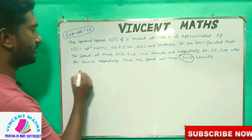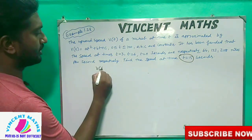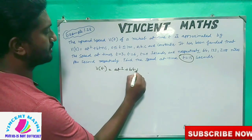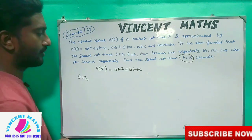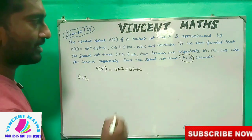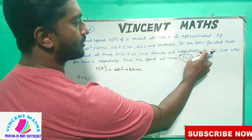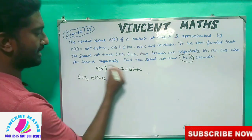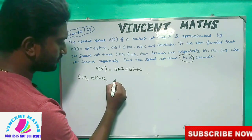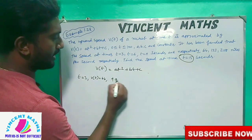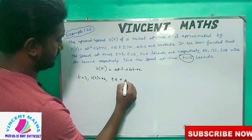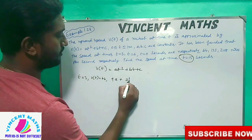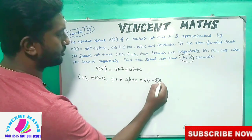Okay friends, come to the table. We have the common equation V(t) = a·t² + b·t + c. Now at time t equals 3 seconds, the speed is 64. So substituting t=3: 9a plus 3b plus c equals 64. This is equation 1.